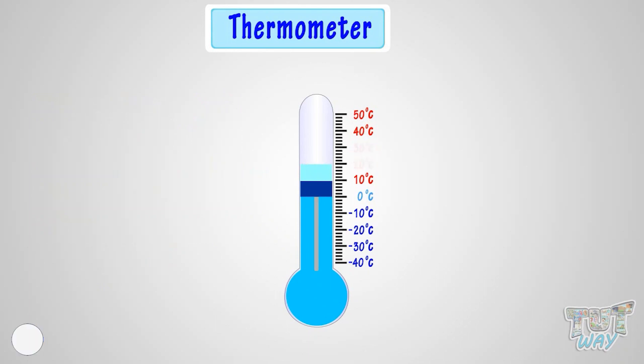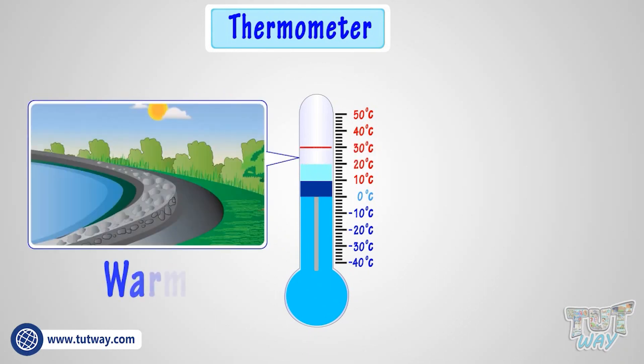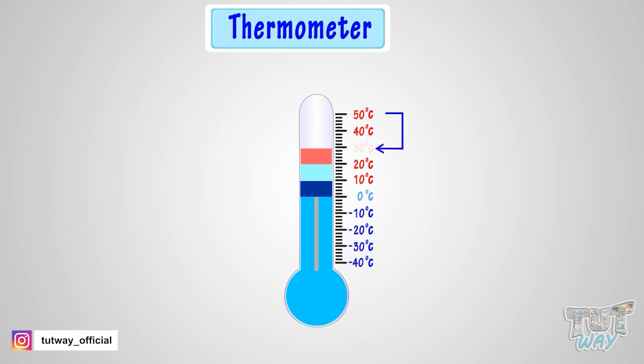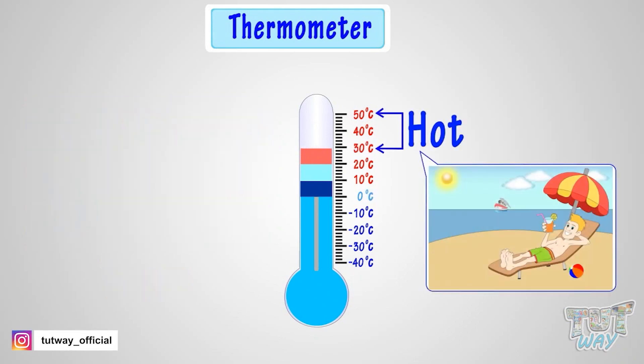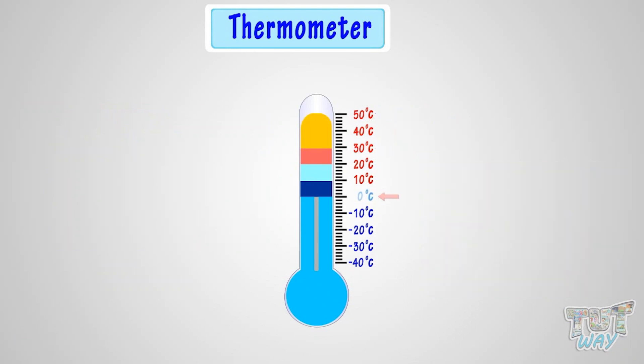20 to 30 degrees Celsius is warm, and 30 degrees Celsius and up is hot. 0 degrees Celsius is the freezing mark of water.